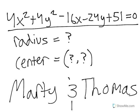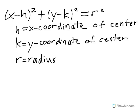In order to find the radius and center of the circle, we must change this polynomial equation into standard circle equation form, as seen here. In this form, h equals the x-coordinate of the center, k equals the y-coordinate of the center, and r equals the radius.